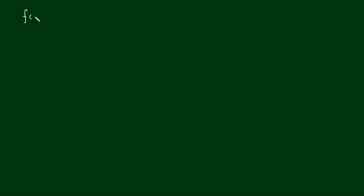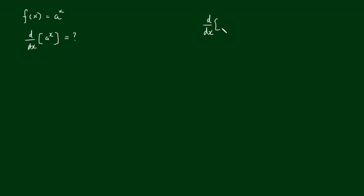An exponential function is any function that has a positive real number base raised to the power of x. In this video we're going to find the derivative of the most basic exponential function, a to the x. It's much easier to find this derivative using results we already know — specifically that the derivative of e to the x is e to the x, and we'll also need to apply the chain rule.